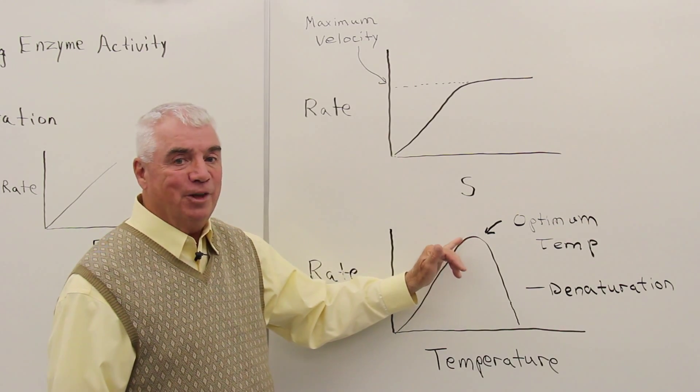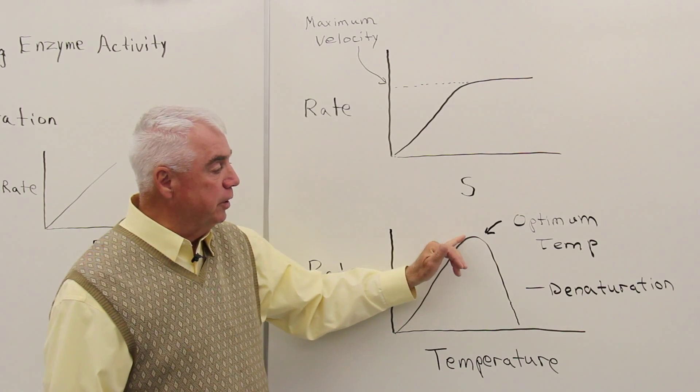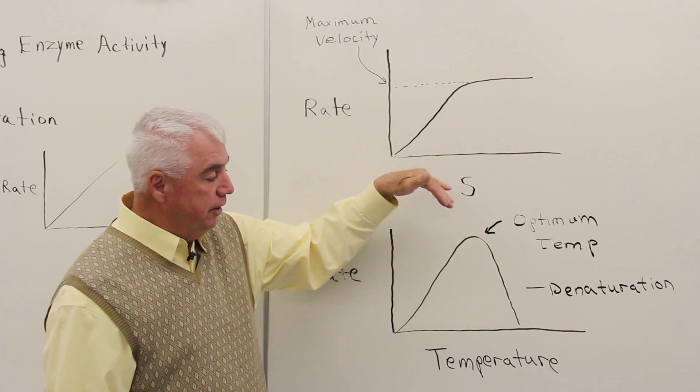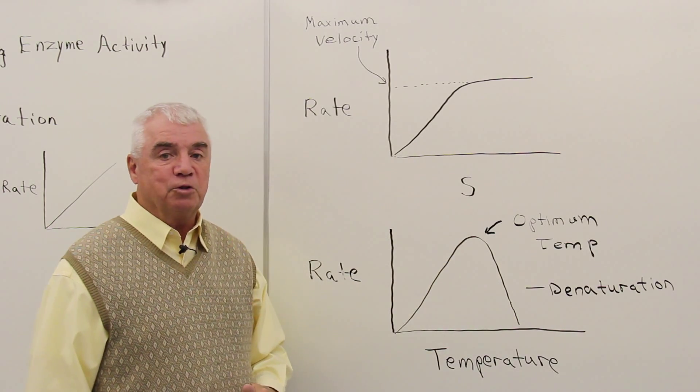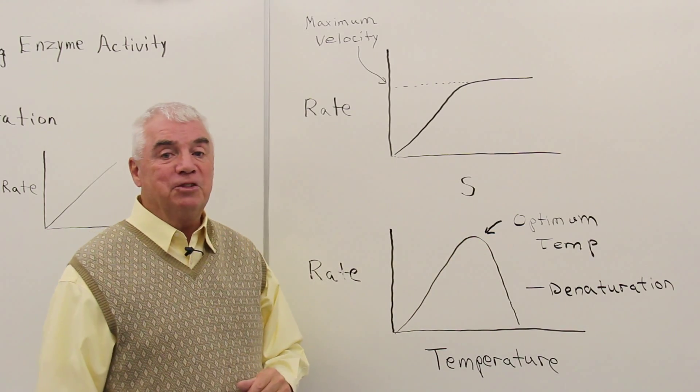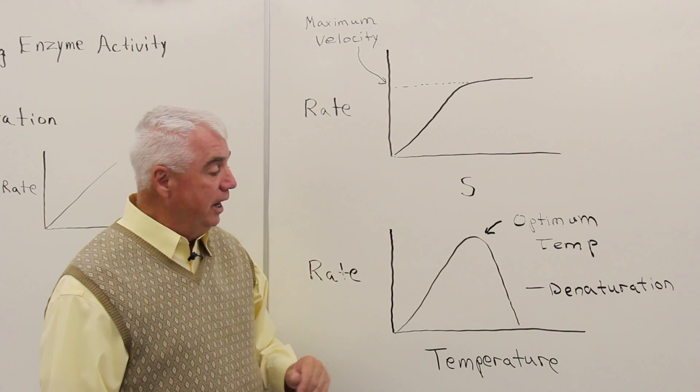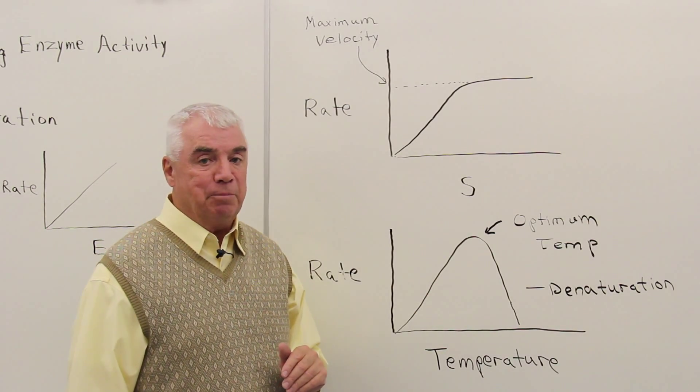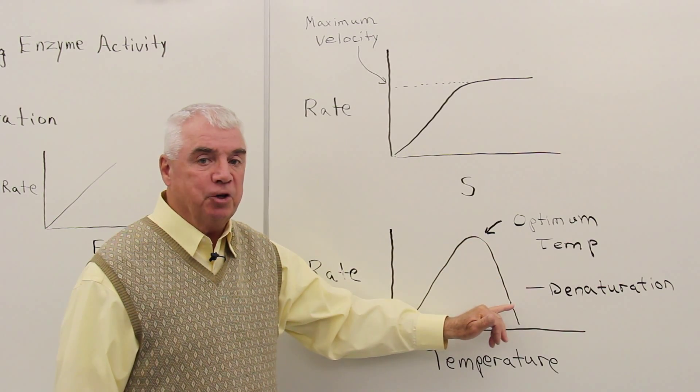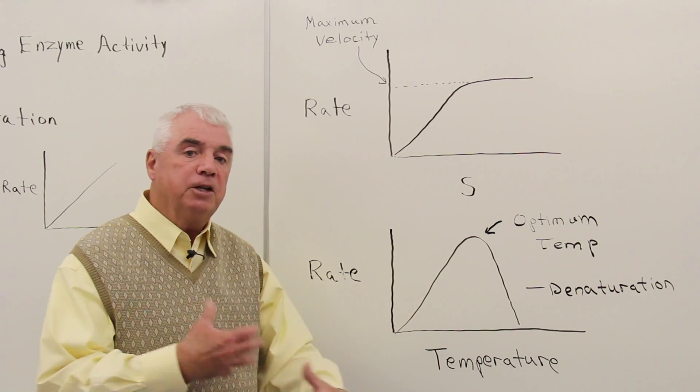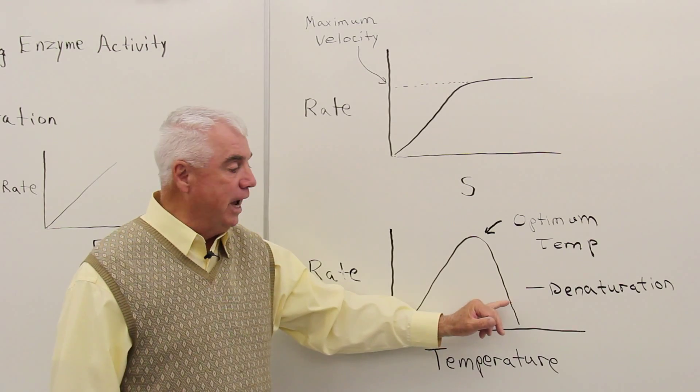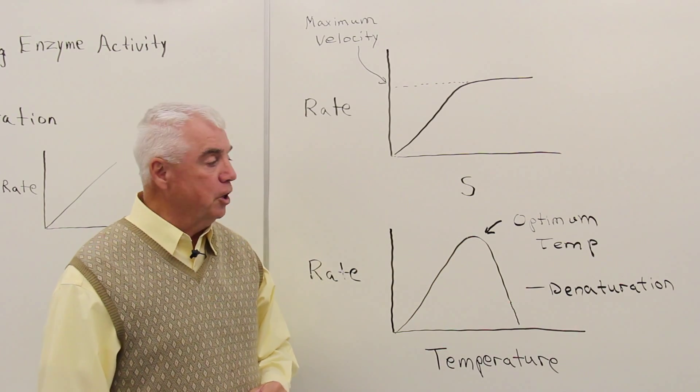But with an enzyme-catalyzed reaction, we find out that there's a limit. There's an optimum temperature, and then the curve drops off. The reaction goes slower and slower. How can you explain that? Well, we know that enzymes are proteins, and proteins are susceptible to changes in temperature. And over here, probably protein denaturation is occurring. And as the enzyme loses that specific structure, it can no longer catalyze the reaction, and so the reaction goes slower and slower.